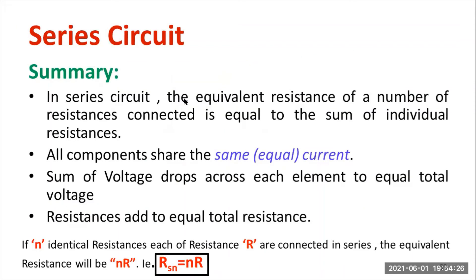In summary, the equal current will be flowing through the entire circuit. The voltage drop will depend on the value of resistance. If there are n identical resistances each having value R connected in series, the equivalent resistance will be N times R. So the formula is R_eq equals N times R.